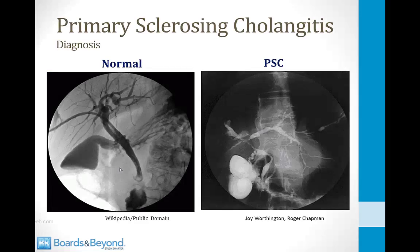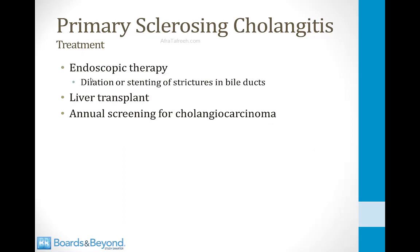On the left side of the screen is a normal cholangiogram with smooth bile duct edges showing no dilatation or narrowing from strictures. On the right is a cholangiogram from a patient with sclerosing cholangitis — some biliary structures are very narrow while others are dilated, demonstrating the beading pattern. Treatment often involves endoscopic therapy, where an endoscope is placed into the biliary tree so that bile ducts can be dilated or stented to break up strictures and allow bile to flow.